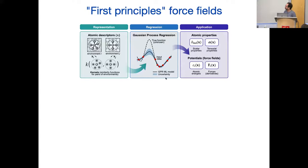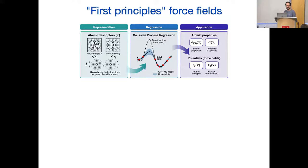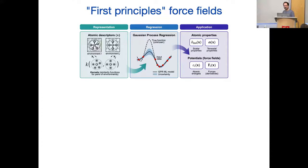How do we do it? We need some atomic descriptors. We don't want to deal with electrons anymore — we take the atoms and say, you have some atoms around you, those are the things that influence the forces and energies of an atom, so we need to describe those neighboring atoms. We need to take account of symmetries: if I rotate your environment, the force should rotate with it; if I permute two atoms in your neighbor list, the forces and energies shouldn't change. That's simple to say but very hard to do in practice — that was the mathematical breakthrough that enabled all of this.